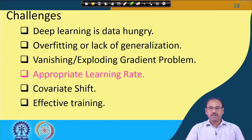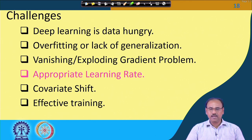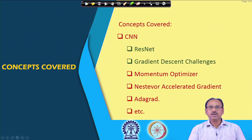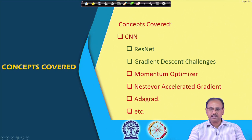The learning approach we are discussing is the gradient descent or stochastic gradient descent, and more particularly what is known as mini-batch gradient descent. We are talking about deciding the appropriate learning rate so that the back propagation learning algorithm becomes more efficient. In the previous class, we discussed the different challenges faced in the gradient descent algorithm itself.